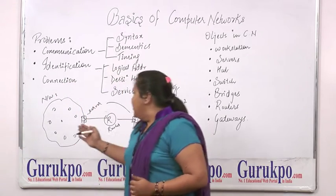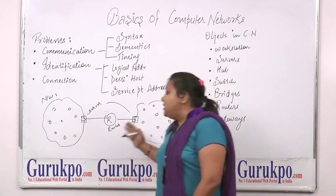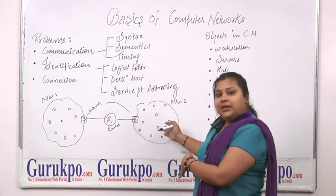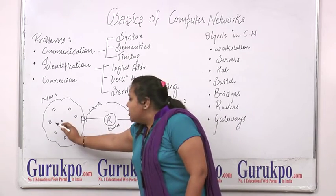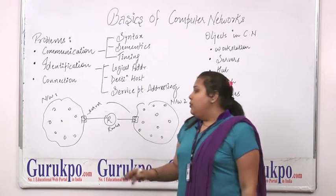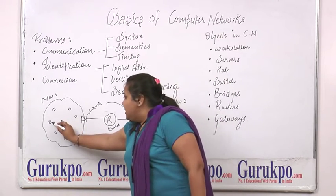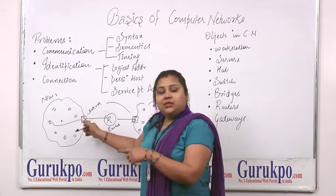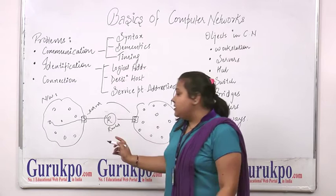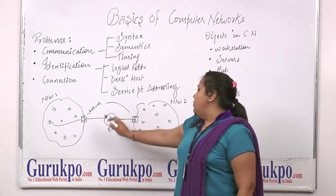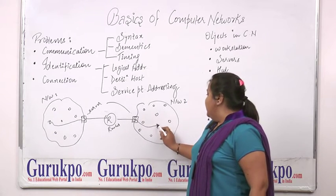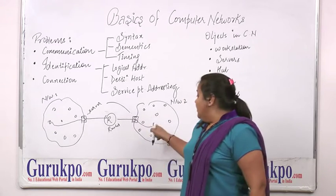I can show you a simple example over here. If this is network 1 and this is network 2, there are some hosts on each network. If a host on this network wants to have communication with a host on another network, it needs to send its data to its server. Then this server will forward this data to the router in between the two networks. This router will forward its data to the server of the desired network, and from there it will get to the desired host.